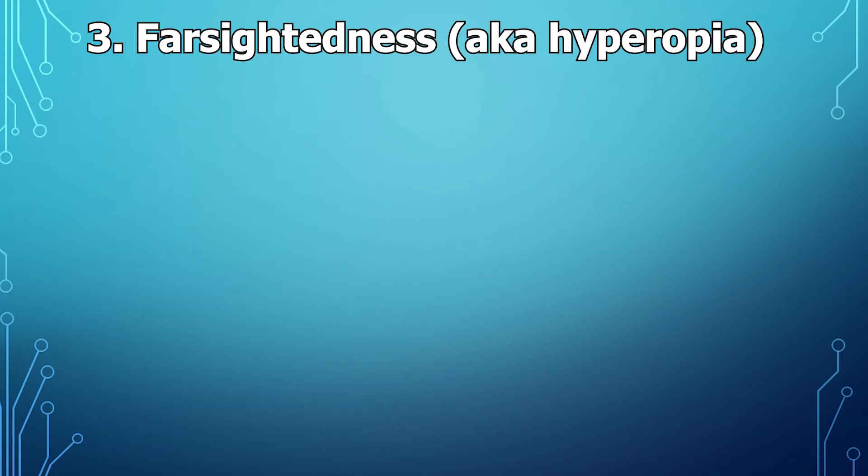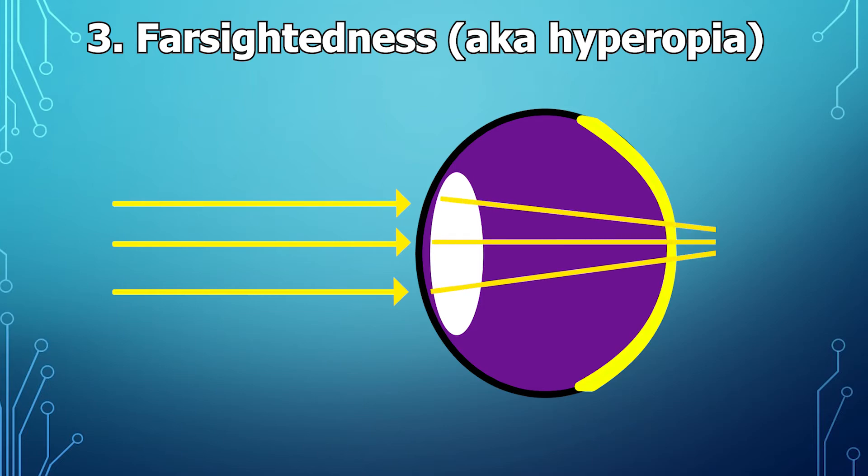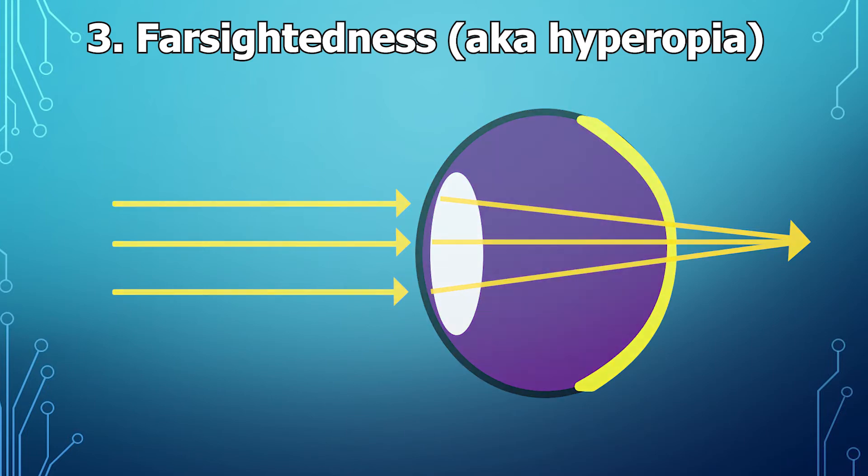Next is farsightedness, also known as hyperopia, and it's essentially exactly the opposite of nearsightedness. Who would have thought far is the opposite of near? So this time you have an eye that's too short. So light comes through and passes through the lens as usual, but because the eye is too short, the light gets focused behind the eye and you end up with another sad, blurry image.